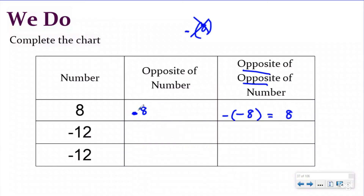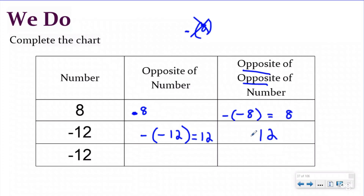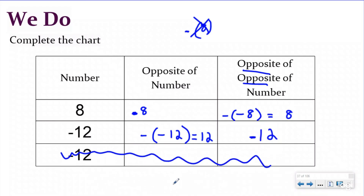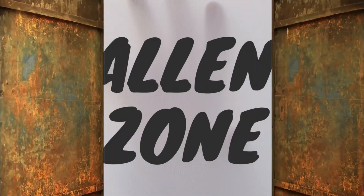Now I'm starting with negative 12. I want the opposite of that, so I put it in parentheses and put a negative sign in front to mathematically show I want the opposite — that would be positive 12. Now if I want the opposite of that, my opposite number is 12, so I put a negative sign in front and it would be negative 12. It makes sense: if you start with negative 12 you go to the opposite to be positive 12, and if you go back to the opposite of that it would again be negative 12.